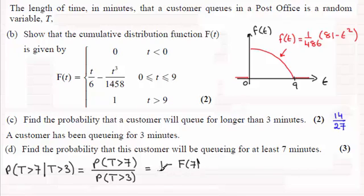And then this is divided by probability of T being greater than three which we worked out in C as being one minus F of three. One minus the probability of being less than three and that came out to 14 over 27. So might as well just write that in there, 14 over 27.